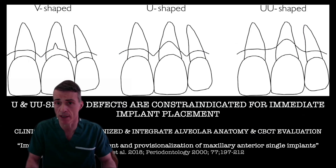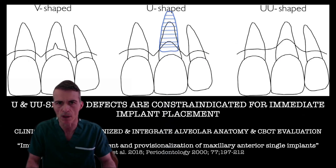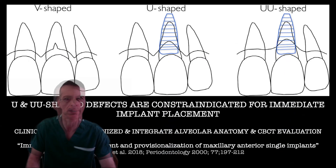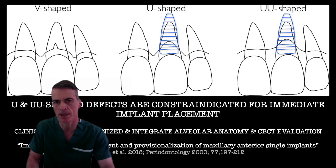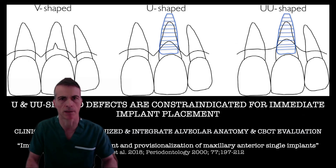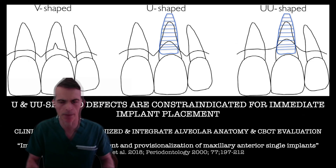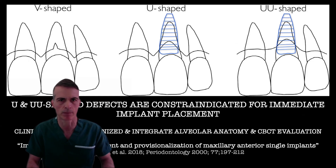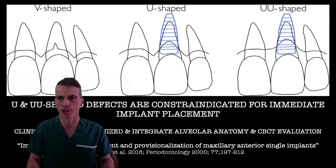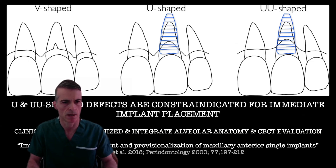The bucco-lingual can be more critical, especially when you have configurations such as the U and W shape, which tell you about the importance of the attachment levels of the adjacent teeth and the presence of bony defects on the buccal aspect. Imagine placing an implant on a central incisor that has 7–8 mm of buccal dehiscence — the chances of getting a recession may be significantly higher, especially if you have moderate or severe attachment loss on the adjacent teeth.